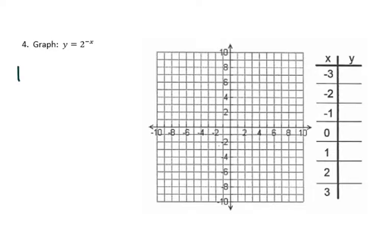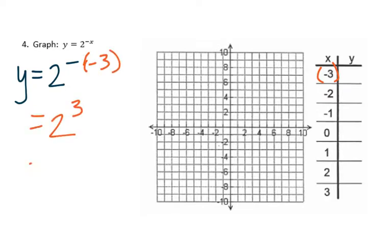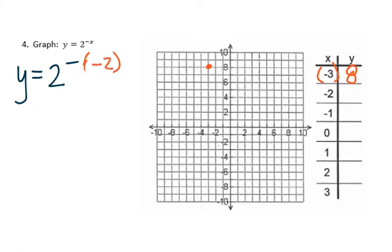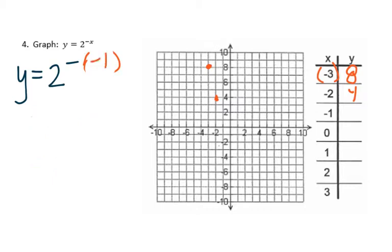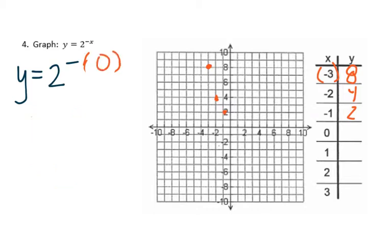Plugging in negative 3: instead of x, we have parentheses with negative 3. That means we have 2 to the positive 3, which is 8. So our first coordinate is negative 3, 8. Next, plugging in negative 2: we have 2 to the positive 2, which is 4. So our next point is negative 2, 4. Then plugging in negative 1: we have 2 to the positive 1, which is just 2. So negative 1, 2 is our next coordinate. Then plugging in 0: we have 2 to the negative 0, which is the same as 2 to the 0. As much as you want that to be 0, it's actually 1. So 0, 1.